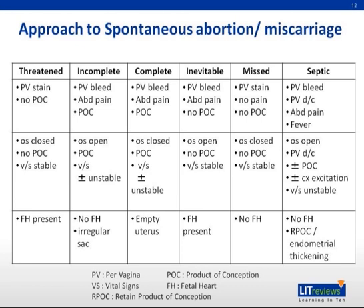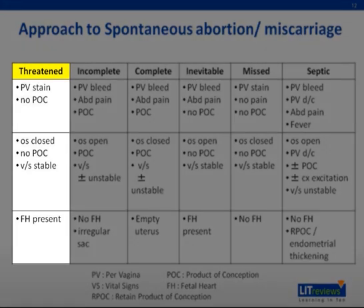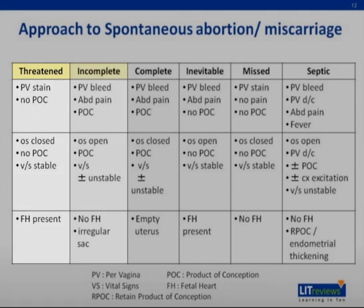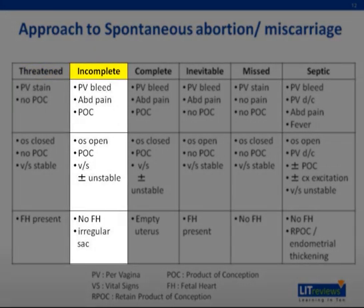We shall now discuss the different types of spontaneous abortions. A threatened miscarriage is diagnosed when the patient presents with per-vaginal staining, usually without abdominal pain, but on examination the cervix is closed, and the scan shows fetal cardiac activity. An incomplete miscarriage is when the patient has per-vaginal bleeding associated with lower abdominal cramps and sometimes passage of products of conception. On examination, the cervical os is open with products of conception seen, and the scan shows no fetal cardiac activity with an irregular gestational sac or remnant products of conception.